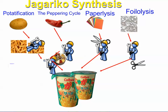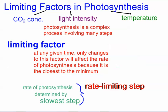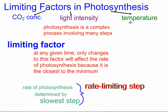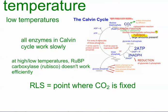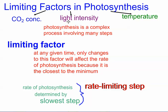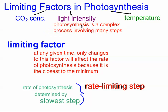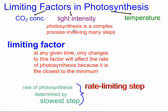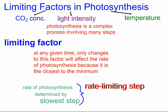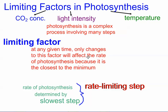At any given point, any one of these steps could be the step limiting the whole process of Jagariko synthesis. The same is true for photosynthesis. There are three main factors to consider — and these happen to be the three main factors you might investigate in an experiment: temperature, light intensity, and carbon dioxide concentration. A limiting factor is the one factor that, if changed, can actually increase the rate of a reaction like photosynthesis, because it's closest to its minimum.